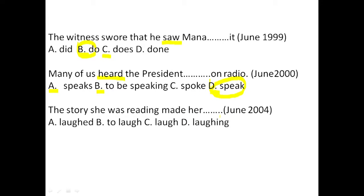Next: the story she was reading made her dash. The key word is made. After make/made, the verb coming supposed to be in bare infinitive — no to before it, no s, no -ing, not in past tense. Options: A: laughed — wrong, past tense. B: to laugh — wrong, because of the to. C: laugh — correct. D: laughing — wrong, contains -ing. Our answer is option C: laugh. The story she was reading made her laugh.